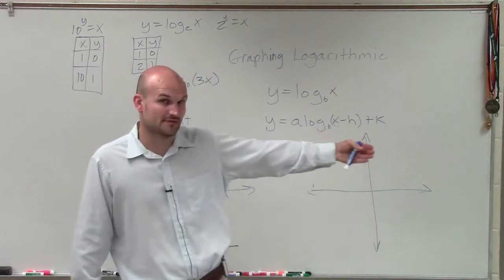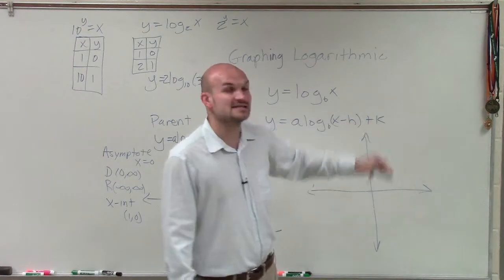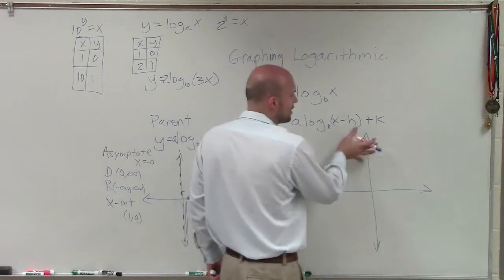Whenever you're adding or subtracting inside the function, that's going to be shifting your graph left to right. And remember, this represents as the opposite. So if it's x minus h, therefore, you're going to shift your graph h units to the right. If it was x plus whatever your number h, you're going to shift it that many units to the left. And then k is going to represent your numbers that you're adding or subtracting outside your function. And that's going to shift the graph up or down.